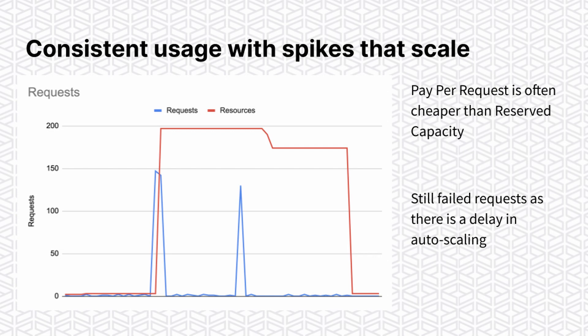This isn't great because you're paying for that unused capacity. In this use case it is sometimes cheaper to use pay per request, but that depends on how big your spikes are and how often they occur. Also note that because the spike went way above the provisioned capacity, there are going to be some failed requests before DynamoDB has scaled up. So you need to think about how you're going to handle the fact that some requests to DynamoDB will be throttled.